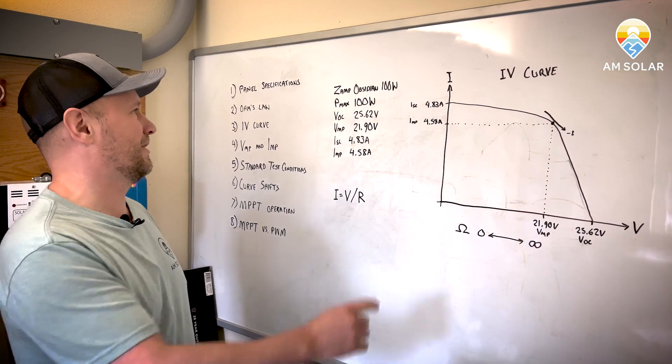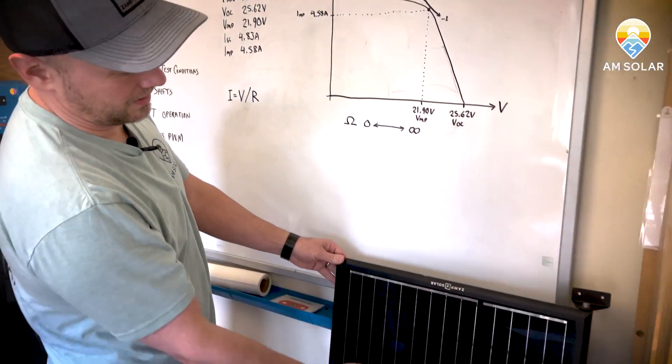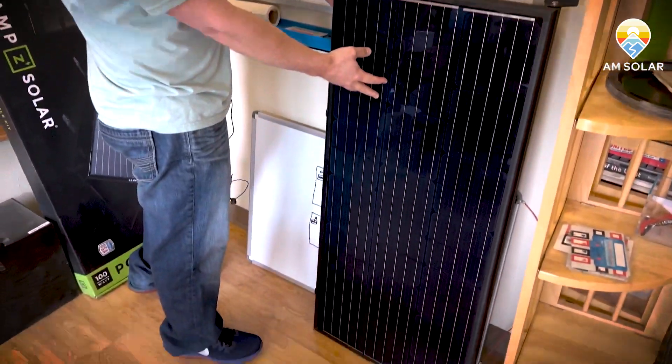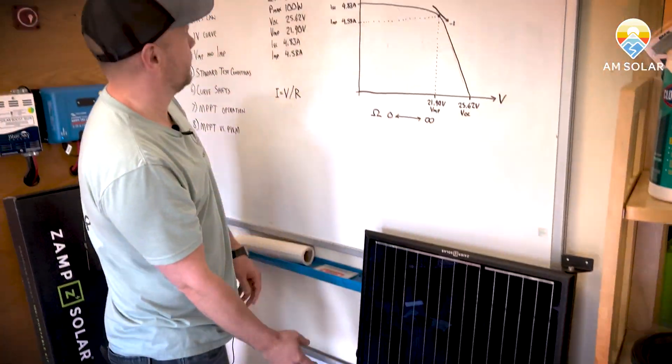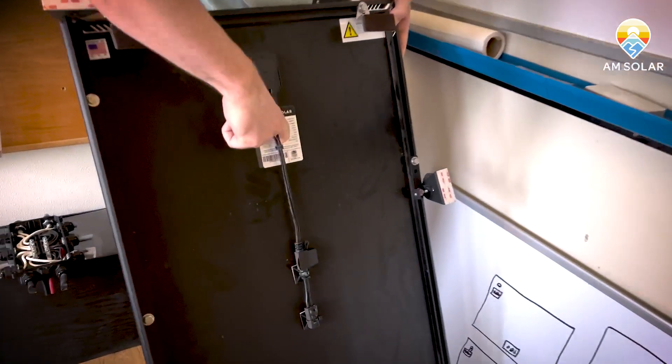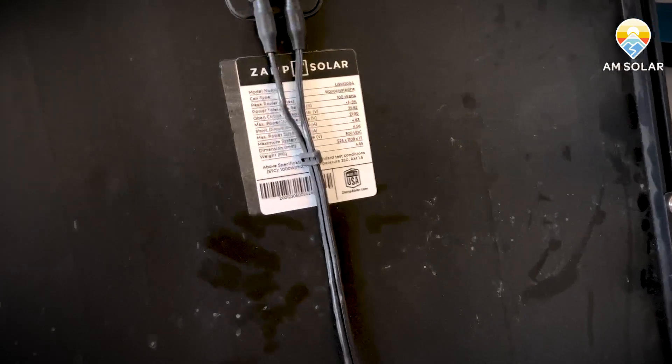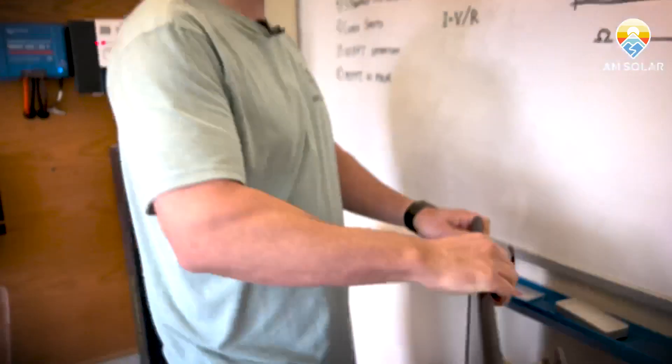So we're going to start off with panel specifications and we're going to use the hugely popular Zamp Obsidian 100 watt panel. On the back of the panel right here you can see the panel specifications and I summarize the important ones on the dry erase board.